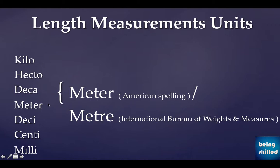It is decreasing from top to bottom — kilo is the largest, then smaller, then smaller, and milli is the smallest. When going from bottom to top, each unit is a multiple of ten: ten millimeters equals one centimeter, ten centimeters equals one decimeter, ten decimeters equals one meter, ten meters equals one decameter, ten decameters equals one hectometer, and ten hectometers equals one kilometer.